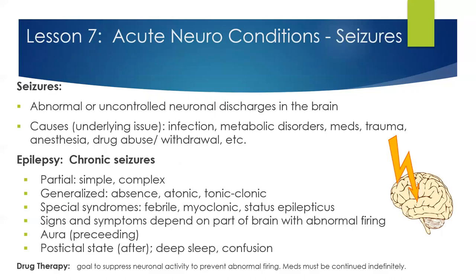Seizures are abnormal or uncontrolled neuronal discharges in the brain. Common causes are infection, metabolic disorders, medications, or trauma. The most common seizure in children is a febrile seizure. The postictal state is when the seizure is over — the patient often presents like they are in a very deep sleep. The goal of anti-epileptic or seizure medications is to prevent and suppress neuronal activity to prevent abnormal firing. Medications given for epilepsy must be continued indefinitely — patients can't just stop these medications.